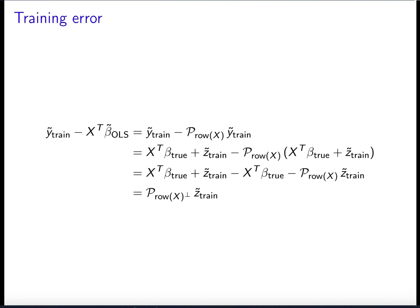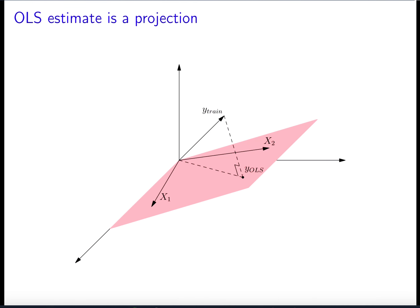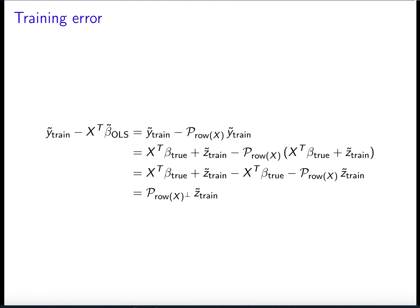In our 3D example, this is the projection onto the line orthogonal to the 2D subspace — a 1D line. So the training error is the projection of a Gaussian random vector of dimension n onto the complement of the row space of X. Because X has p rows, the row space has dimension p, so this complement has dimension n minus p, since the dimension of a subspace plus its complement equals the ambient dimension n.